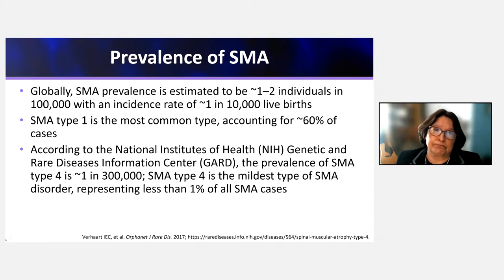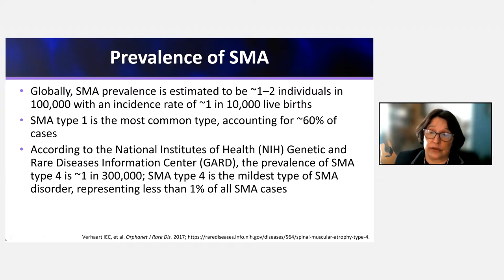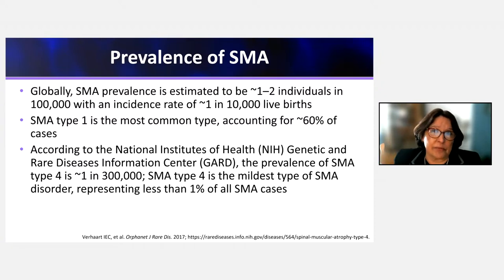What is the prevalence of SMA? It varies across the world. In communities with high consanguinity, rates may be very high given its autosomal recessive inheritance. Europe has higher rates of SMA than non-European countries. According to the National Institutes of Health, SMA type 4 is the least common, at about 1 in 300,000, compared to an average of 1 in 10,000 for SMA as a whole. SMA type 1 has the highest birth prevalence.